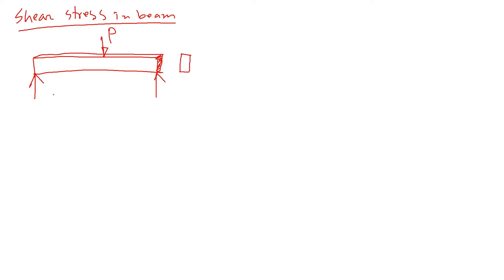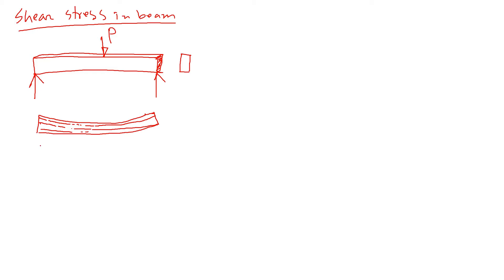If we apply forces like that, then this beam will bend like this. Imagine that it is made up of a bunch of layers. What's going to happen is these layers start to slide against each other — like that. So that causes the horizontal shear, due to imaginary planes shearing each other.